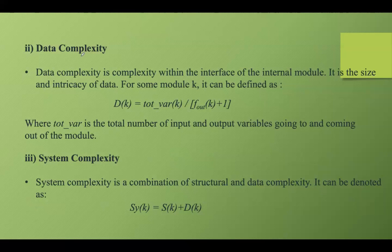Data complexity mainly evaluates the complexity arising from the data structures and attributes used in the system. We can consider this as the complexity within the interface of an internal module. The total variables represent the total number of input and output variables going in and out of the module. System complexity looks at the overall complexity of the software system as a whole, taking into account both structural and data complexities together. The notation for system complexity combines both structural complexity and data complexity.